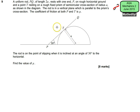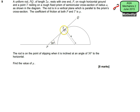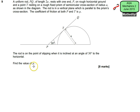The rod is in a vertical plane which is parallel to the prism's cross-section, and the coefficient of friction at both P and T is μ — a common coefficient of friction between these two surfaces. The rod is on the point of slipping when inclined at an angle of 30 degrees to the horizontal, and we need to use this information to find the value of μ.